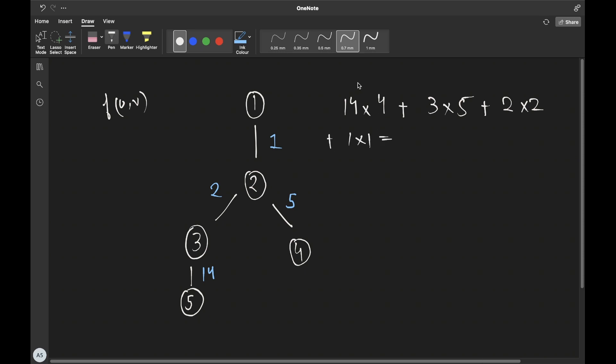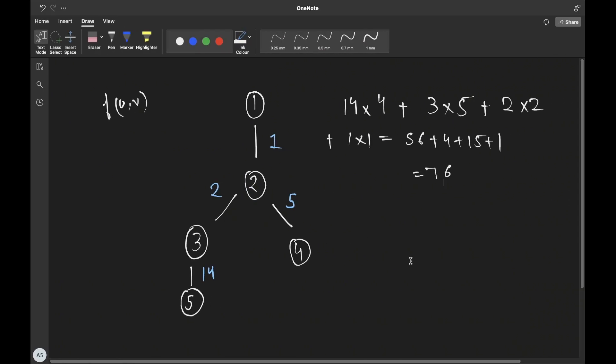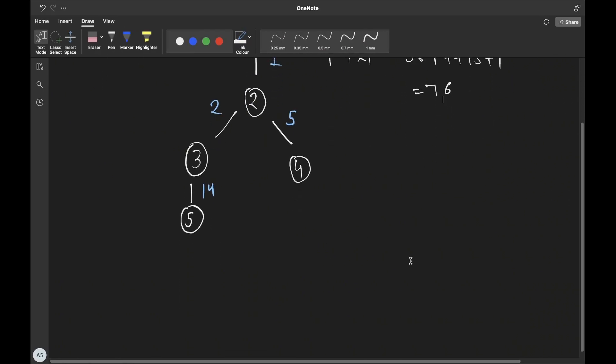Which is basically 56 plus 15 plus 4 plus 1, which gives us 76, which is also the sample output. All right, so how do we actually solve this problem?